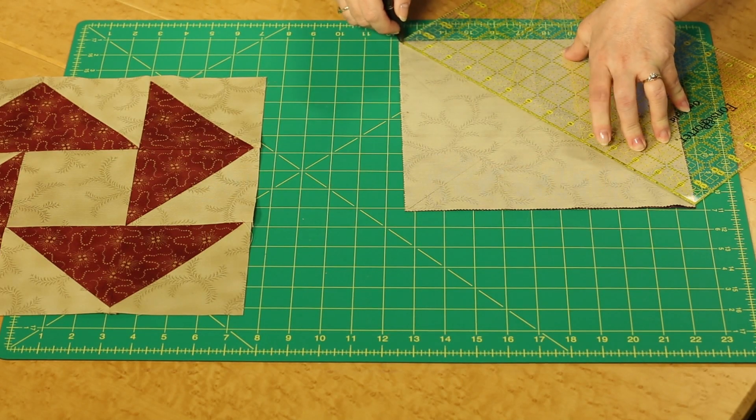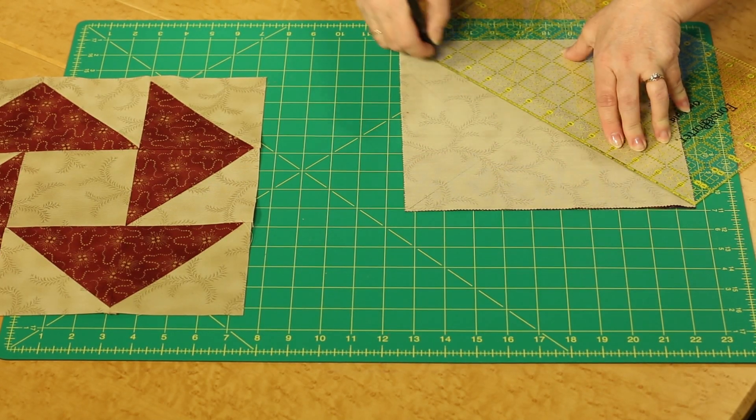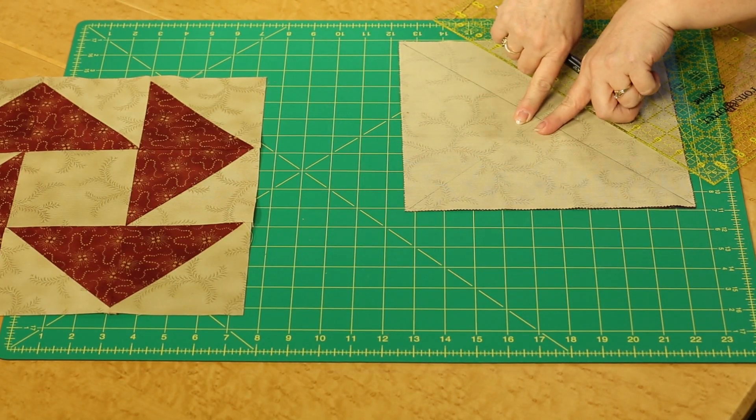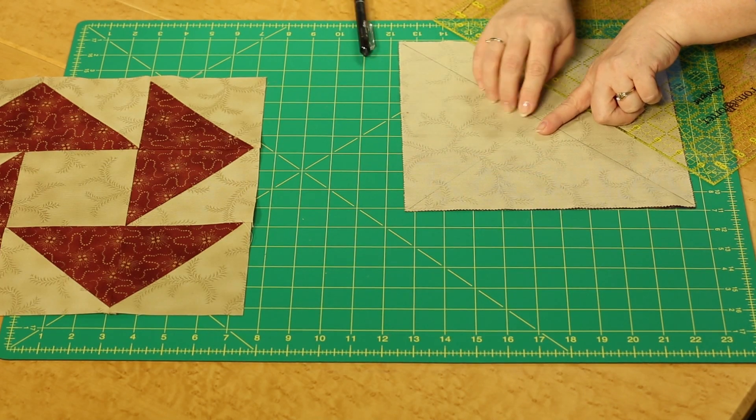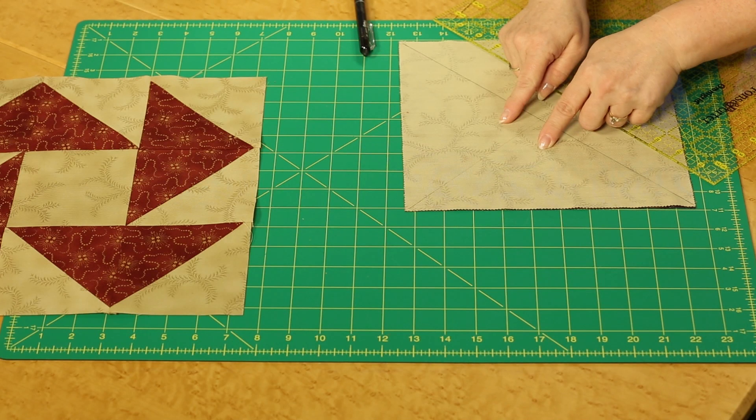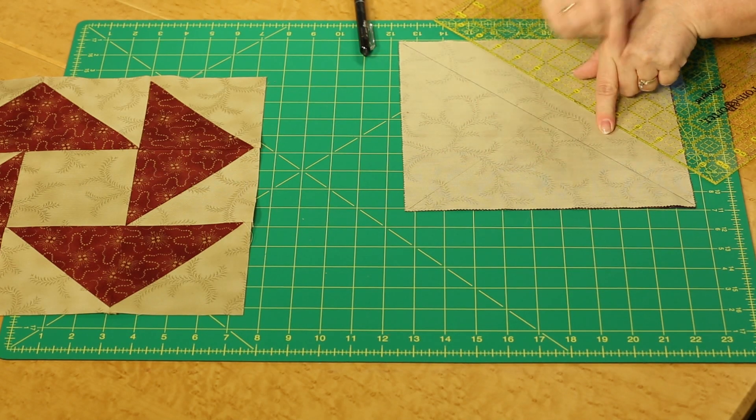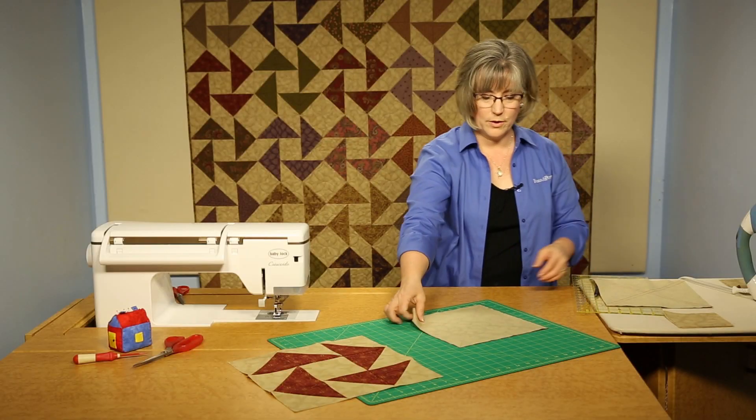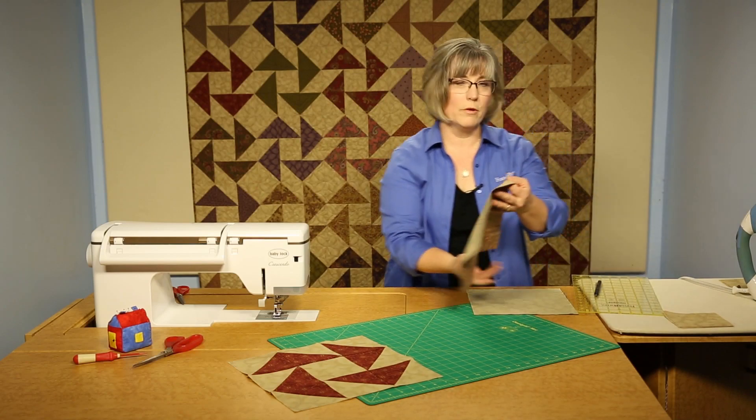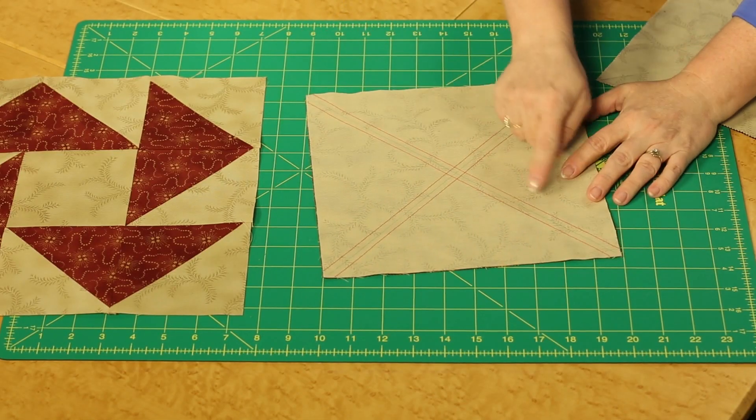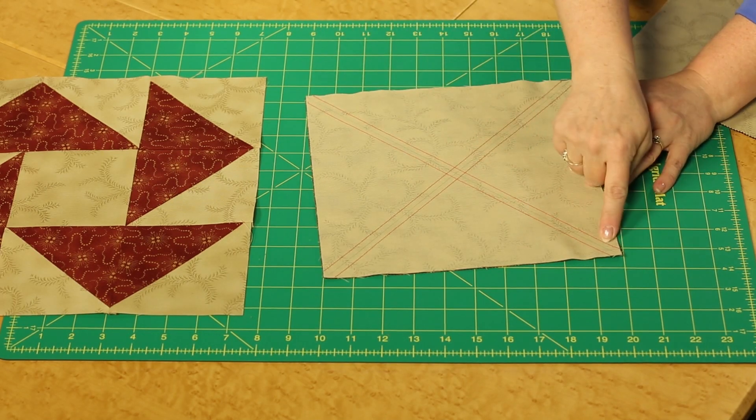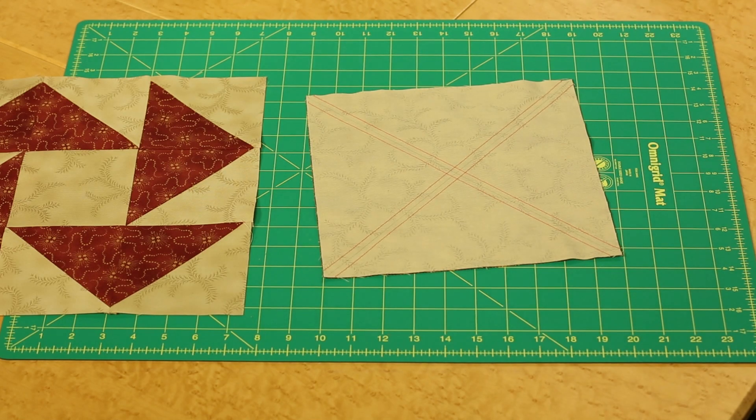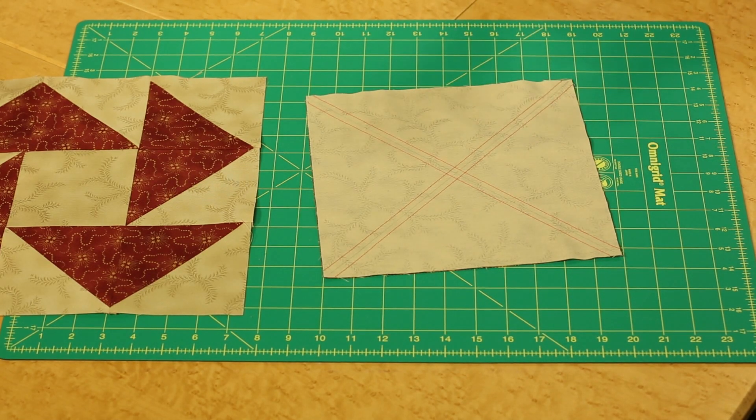If you're a beginner at piecing, you may want to mark a quarter inch line on each side of that center because that center is where we're going to be cutting this apart. We're going to be stitching a quarter inch to each side of both of those diagonals. I have one that's already stitched in bright red thread so you can see the parallel lines going each direction diagonally across the block.